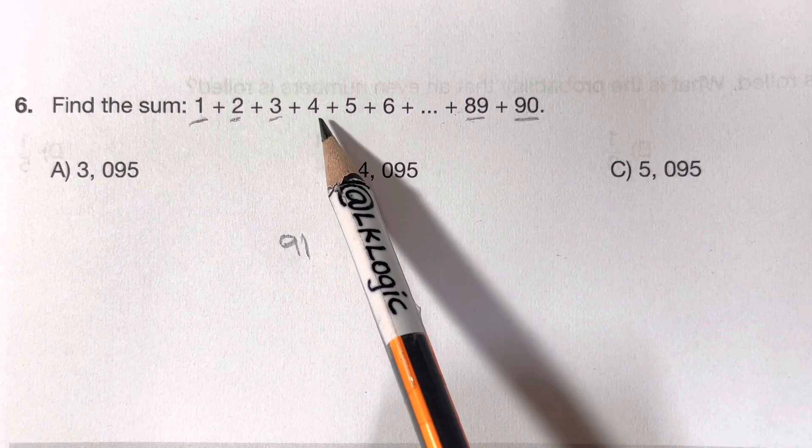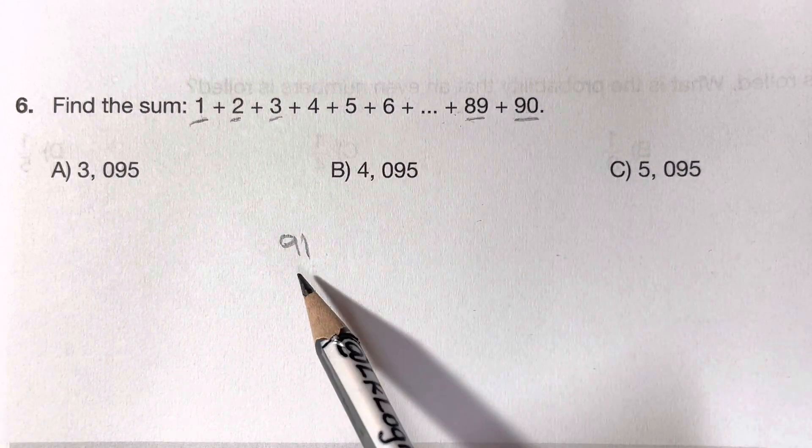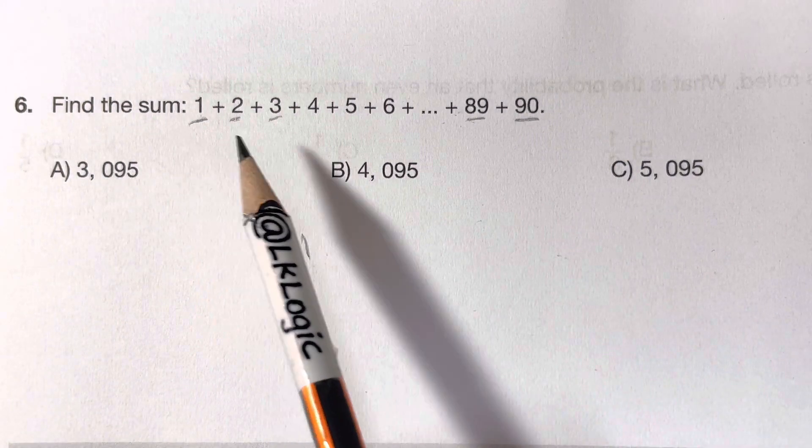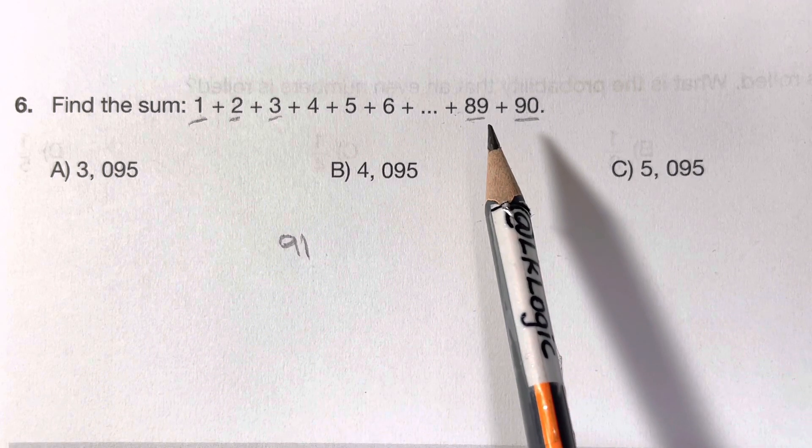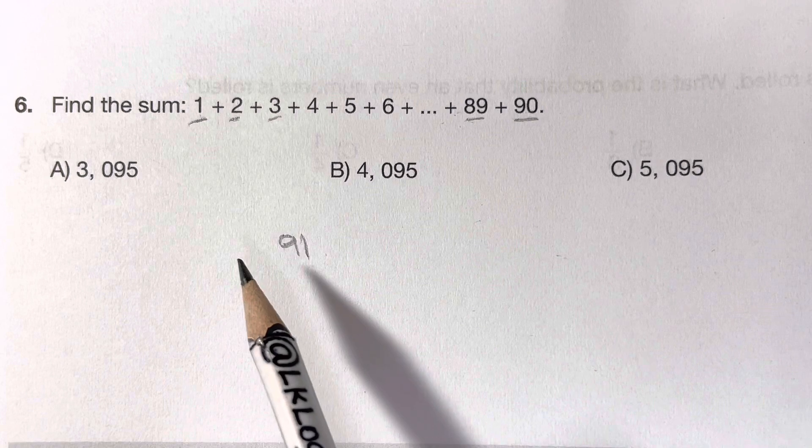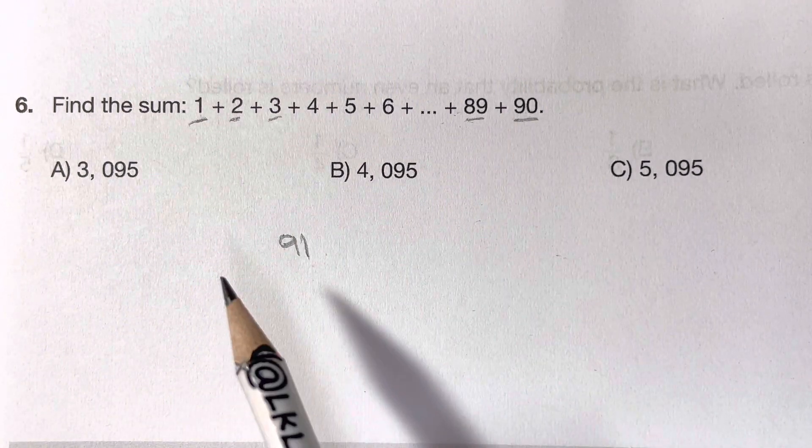4 plus 87 is 91. 5 plus 86 is 91. So you are having pairs. If you can see a pattern here, then that's great. Can you see a pattern? That's a pattern formed here, yes.